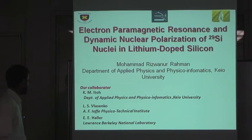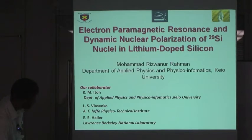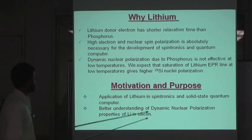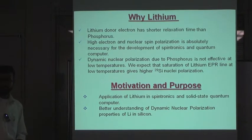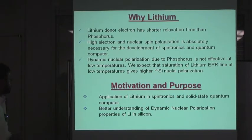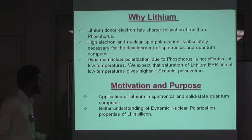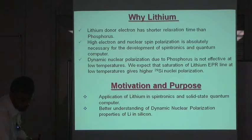Our collaborators are K.M. Etho, L.S. Velasenko and Eugene Haller. Why lithium? Lithium donor electron has shorter electron spin relaxation time than phosphorus. High electron and nuclear spin polarization is absolutely necessary for the development of spintronics and quantum computers. Dynamic nuclear polarization due to phosphorus is not effective at low temperature. We expect that the saturation of the lithium EPR line at low temperature gives higher 29 silicon nuclear polarization. Our motivation is the application of lithium in spintronics and solid-state quantum computers, and better understanding of dynamic nuclear polarization properties of lithium in silicon.